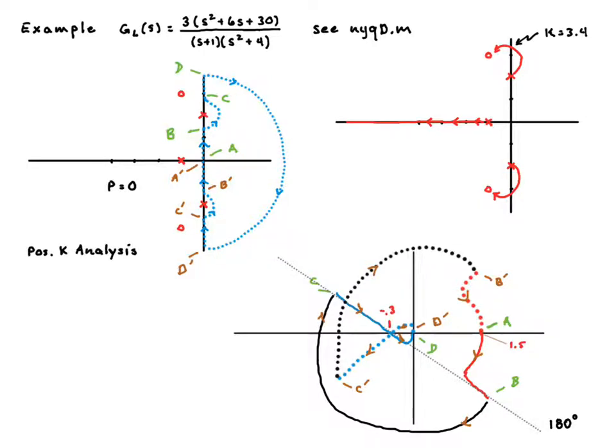Those points are the places where the Nyquist contour crosses the real axis. And that's important because that divides up the real axis for us in terms of evaluating stability for different values of K. So we'll start with the positive K analysis. And really what we started with is realizing that there are no poles of the loop transfer function encircled by the Nyquist contour. So P is equal to zero. That means that any encirclements we get over here is going to imply instability of some flavor.